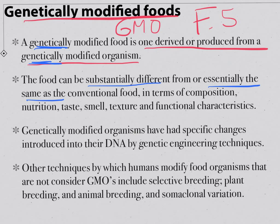The genetically modified food is derived from the organism, so the organism is genetically modified. When you grow that modified organism and produce it for food, then it becomes food. There are specific changes introduced into the DNA of the organism.